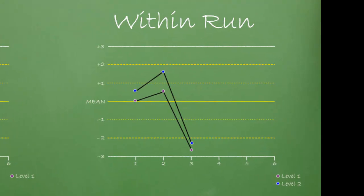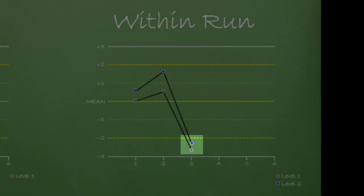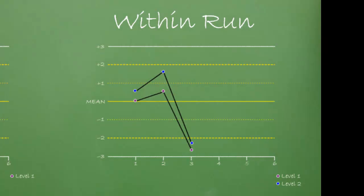This rule can also be violated within a run. This happens when both levels of control exceed the 2-SD limit on the same side of the mean.